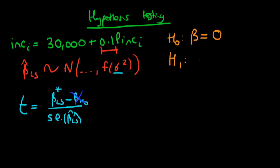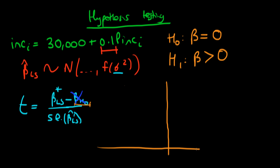So what's the alternative hypothesis? In this context, we are interested in whether the effect of parental income is positive on an individual's level of income, so we're only concerned with the upper tail — a one-sided alternative test. The effect of subtracting the null hypothesis value of beta is that we get a distribution which is centered, at least under the null hypothesis, around zero.